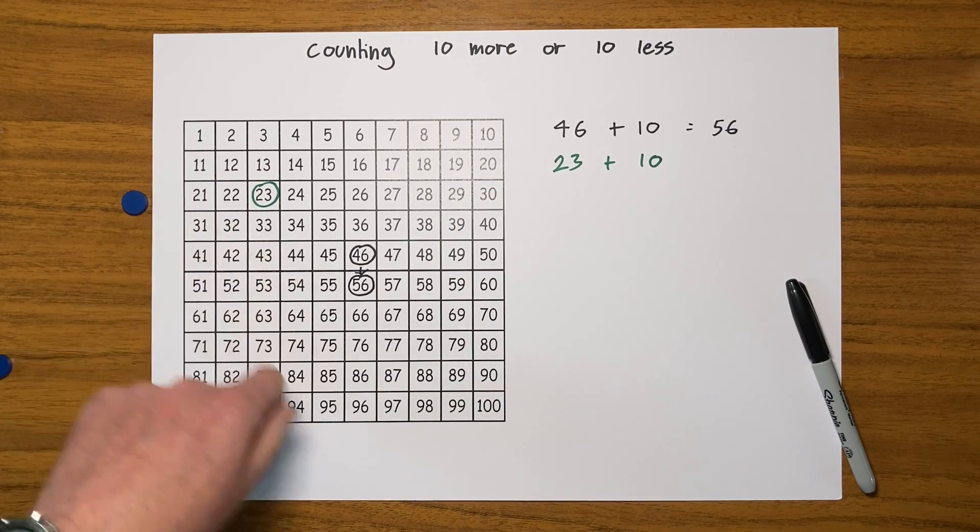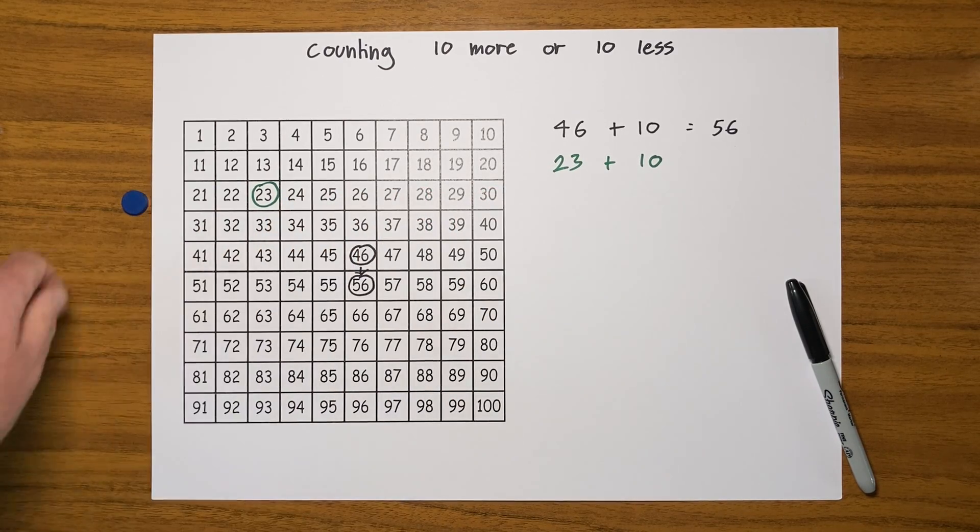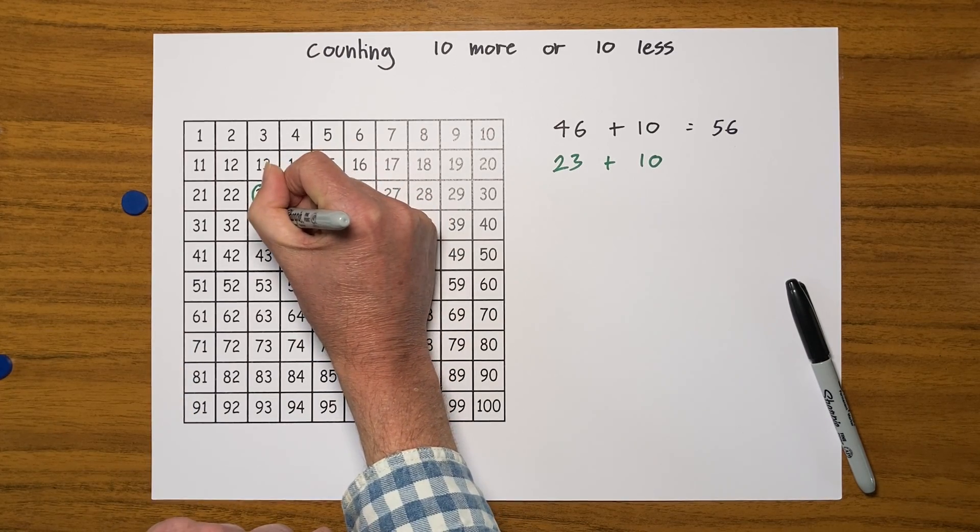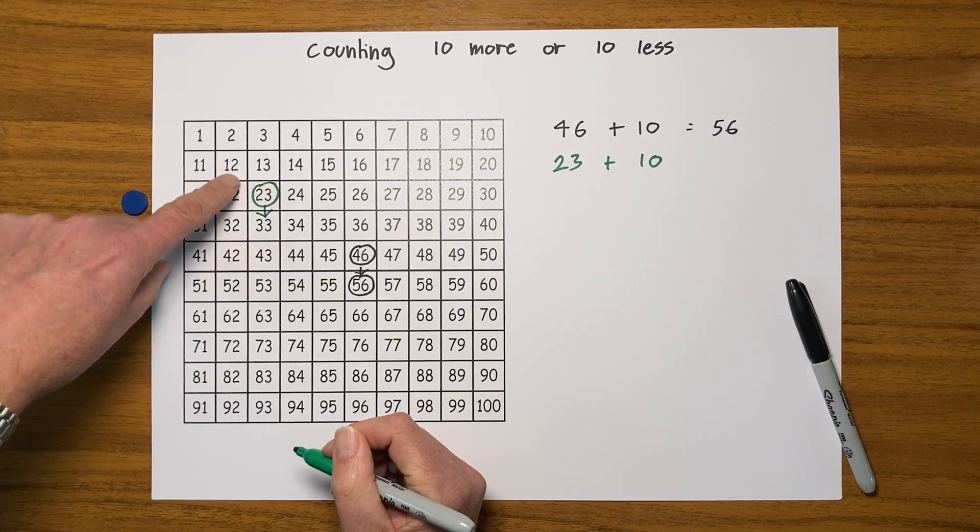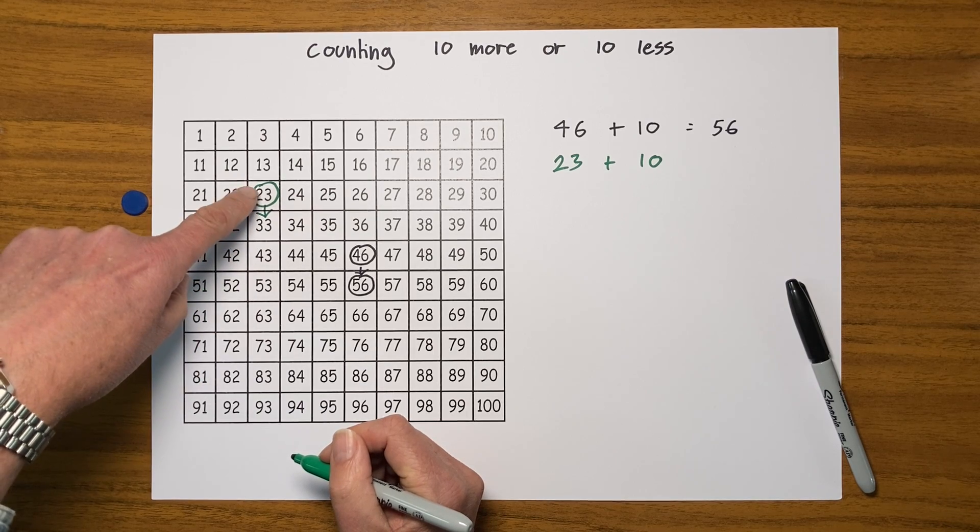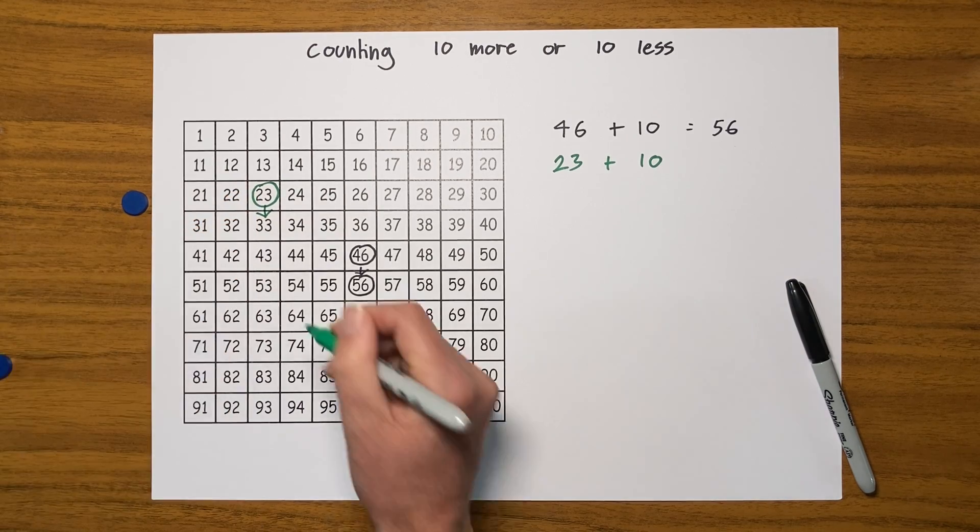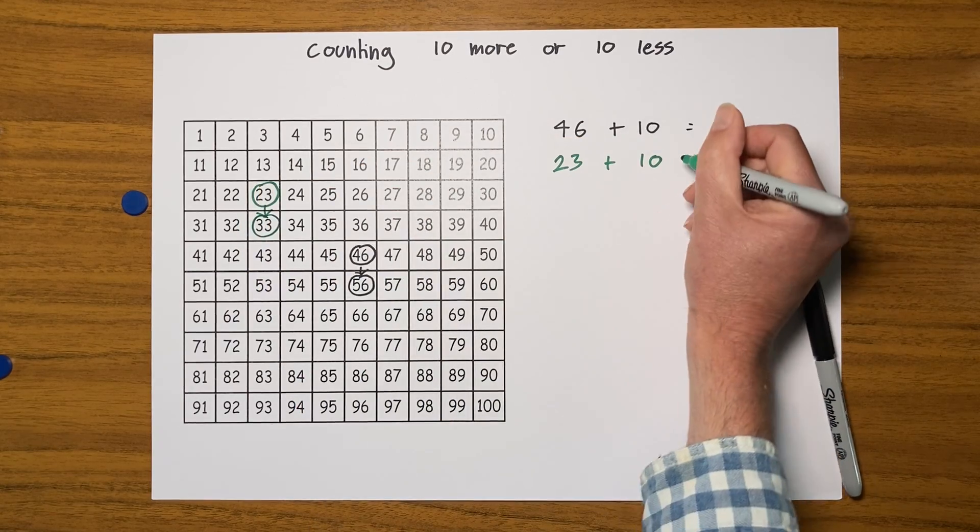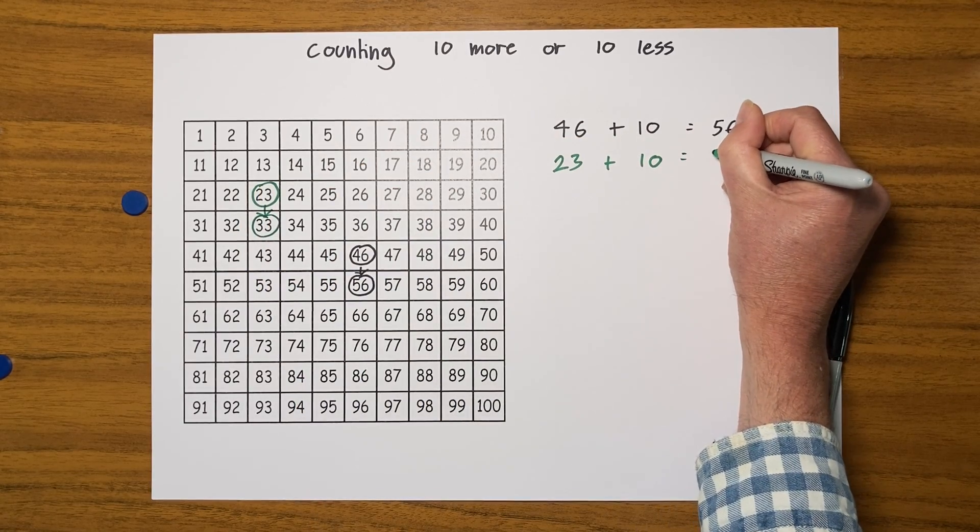And you tell me - now of course I could count along 10, or I could just move down, move down here onto the next row, and I go from 23 to 33, because 33 is 10 more than 23.